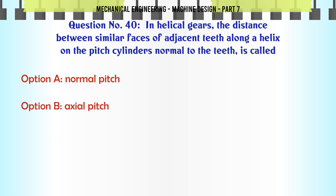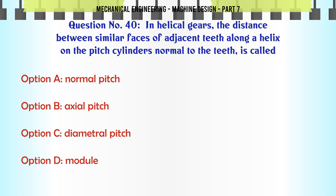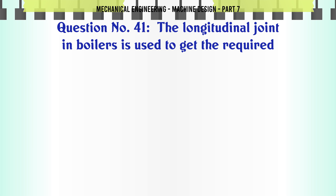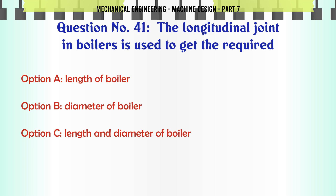In helical gears, the distance between similar faces of adjacent teeth along a helix on the pitch cylinder normal to the teeth is called: a) normal pitch, b) axial pitch, c) diametral pitch, d) module. The correct answer is: normal pitch.